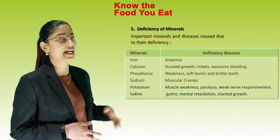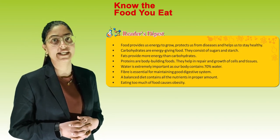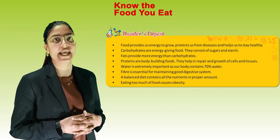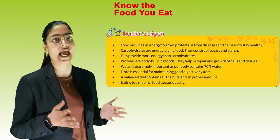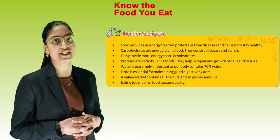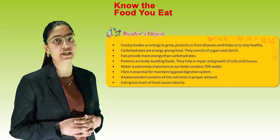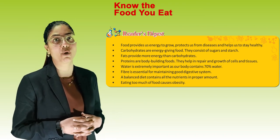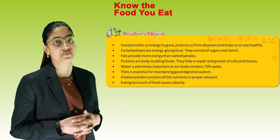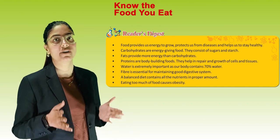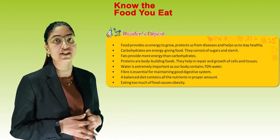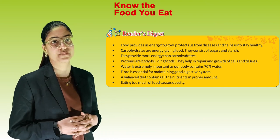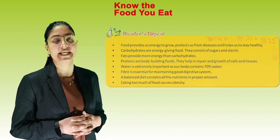Let's quickly revise. Food provides us energy to grow, protect us from diseases and help us to stay healthy. Carbohydrates are energy-giving food consisting of sugars and starch. Fat provides more energy than carbohydrates. Proteins are body-building foods that help in repair and growth of cells and tissues. Water is extremely important as our body contains 70% water. Fiber is essential for maintaining a good digestive system. A balanced diet contains all nutrients in proper amounts. Eating too much food causes obesity. We have completed the chapter — thank you!